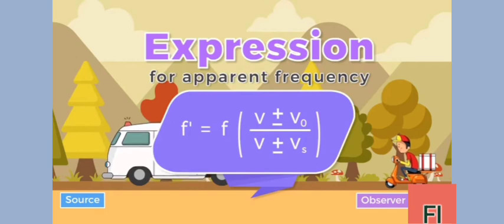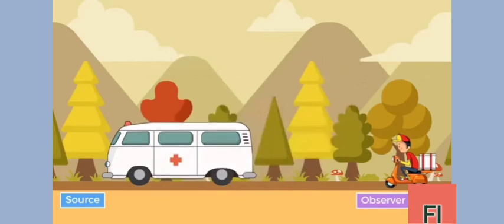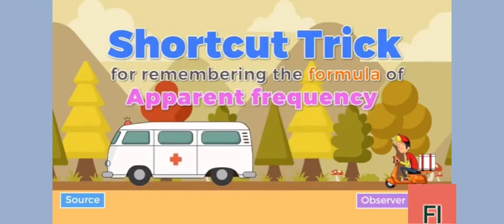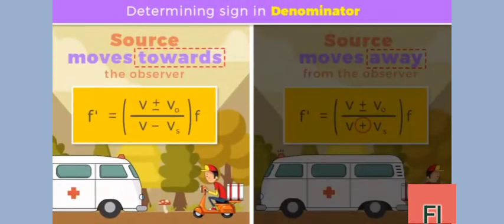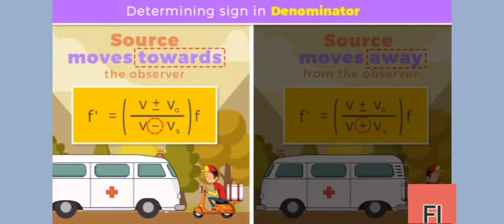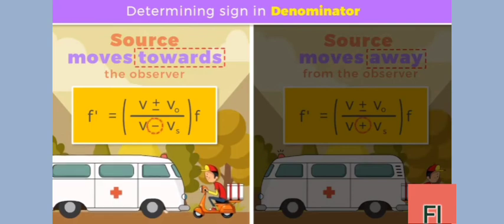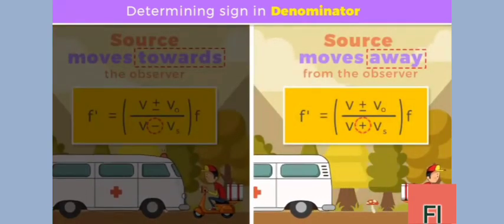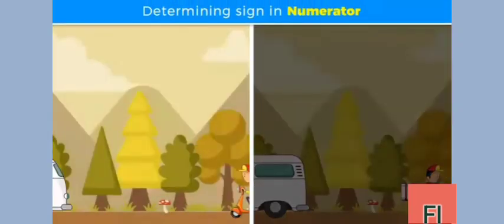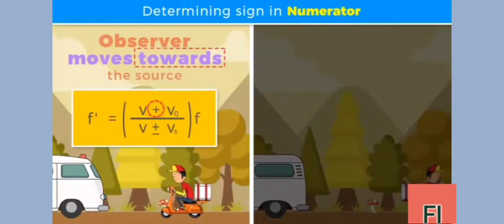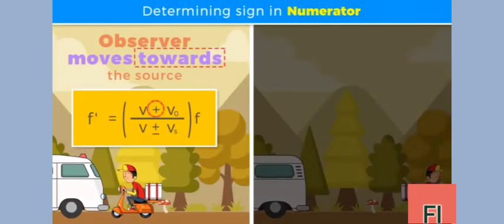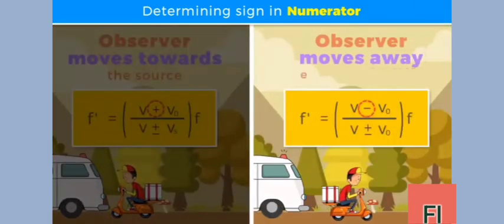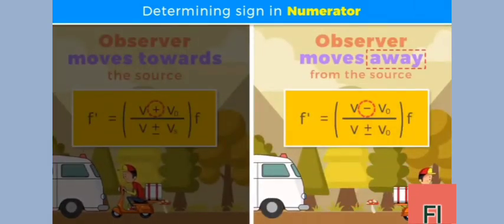Looking at the expression of apparent frequency, we can easily develop a general shortcut trick for remembering the formula. Whenever the source moves towards the observer, do subtraction in the denominator; if the source moves away from the observer, use addition in the denominator. Whenever the observer moves towards the source, do addition in the numerator; if the observer moves away from the source, do subtraction in the numerator.